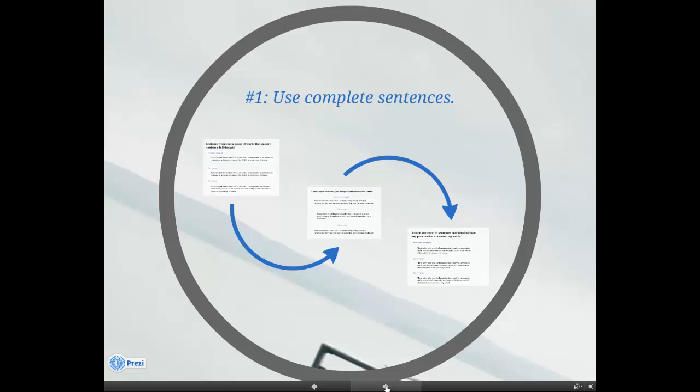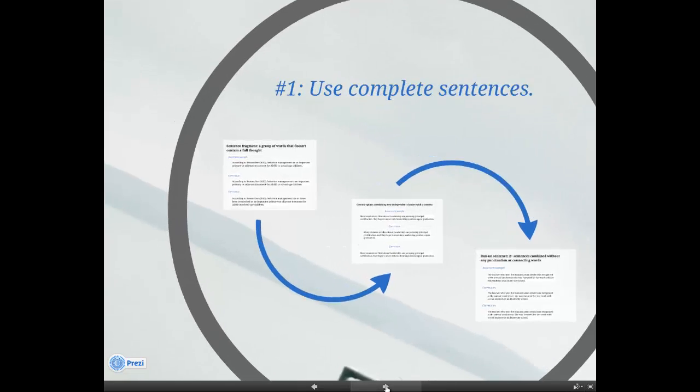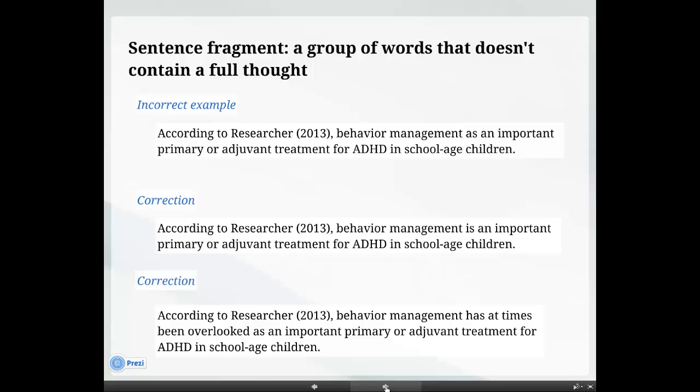Step number one: use complete sentences. A sentence fragment is a group of words that does not contain a full thought, usually because they are missing a subject or a verb.